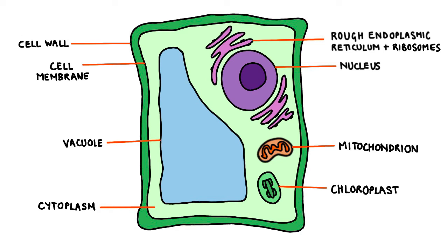Aerobic respiration utilizes oxygen and glucose. Something very unique to plant cells are chloroplasts and chlorophyll. Chloroplasts have a green pigment in them called chlorophyll, which makes leaves appear green. Chloroplasts absorb light energy and convert it to chemical energy in the form of nutrients like glucose. Hence, a plant is able to produce its own food.